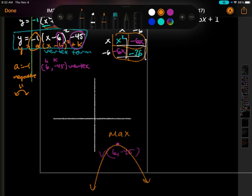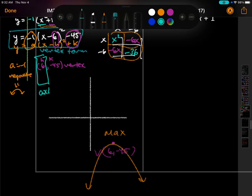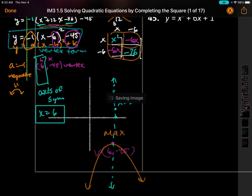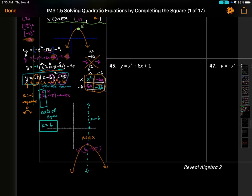That pink point is a maximum. The axis of symmetry is x equals 6 — it folds the parabola in half. Any ordered pair on that line has an x-value of 6, like (6, 3) or (6, 5). That is our axis of symmetry.